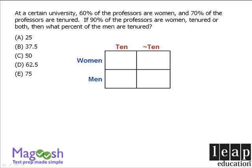Since we aren't told the number of professors, let's say there are 100 professors in total. Now, 60% of all our professors are women, so 60 women in total. If we have 60 women out of 100 professors, then the other 40 must be men.